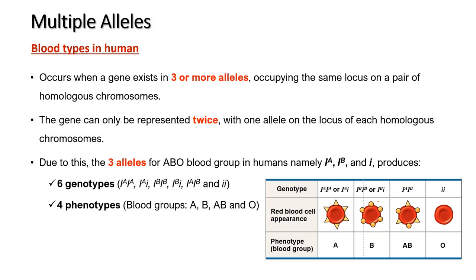Let us now look into multiple alleles. This occurs when a gene exists in three or more alleles occupying the same locus on a pair of homologous chromosomes. A gene can only be represented by two alleles at a time — one allele on the locus of each chromosome — so although there might be more than two alleles in a population, only two alleles can represent the gene in any one individual.